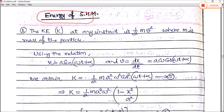In the last class we have seen about the simple harmonic motion — the expression of the displacement term, its velocity and the acceleration. Now in this video we will see about the energy of simple harmonic motion, that is the kinetic energy, potential energy and the total energy of the simple harmonic motion. Let's start.